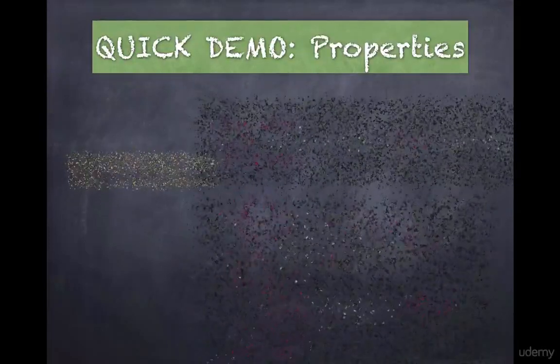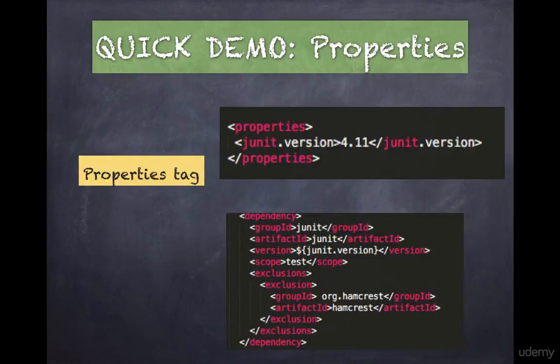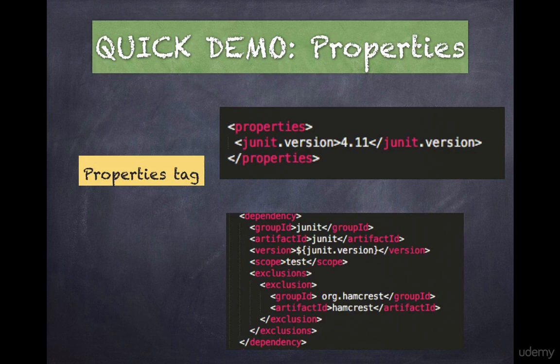So that completes our demo. But let's revisit the pom.xml file once again to learn about one last thing, and that is properties. Maven allows you to declare properties in the pom.xml file using the properties tag. These properties are highly useful for declaring dependency versions.